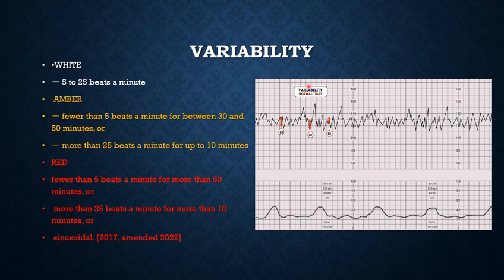Variability means oscillation of the fetal heart rate. Fetal heart rate is not similar all the time — sometimes it goes upwards, sometimes downwards. The difference between the highest and lowest fetal heart rate in one minute is called variability. The normal or white finding is when there is a difference of at least 5 to 25 beats per minute. In the CTG we can see that this is more than 5 beats per minute, meaning it is a normal variability CTG.